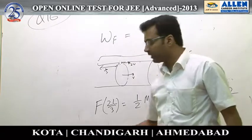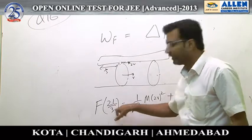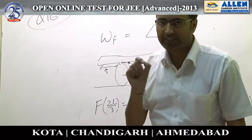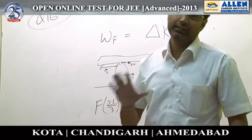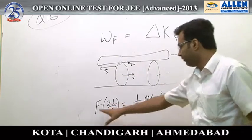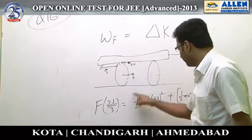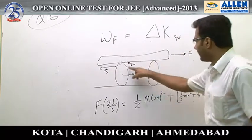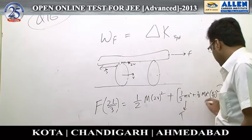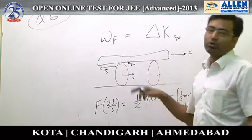Once we apply the work-energy theorem, we write F into 2l/3, because the definition of work is force into displacement of point of application of force, not merely displacement. This point had moved by 2l/3. So force into 2l/3 is equal to change in kinetic energy of the rod plus kinetic energy of the cylinders, which includes translational and rotational components — taken twice because there are 2 hollow cylinders.